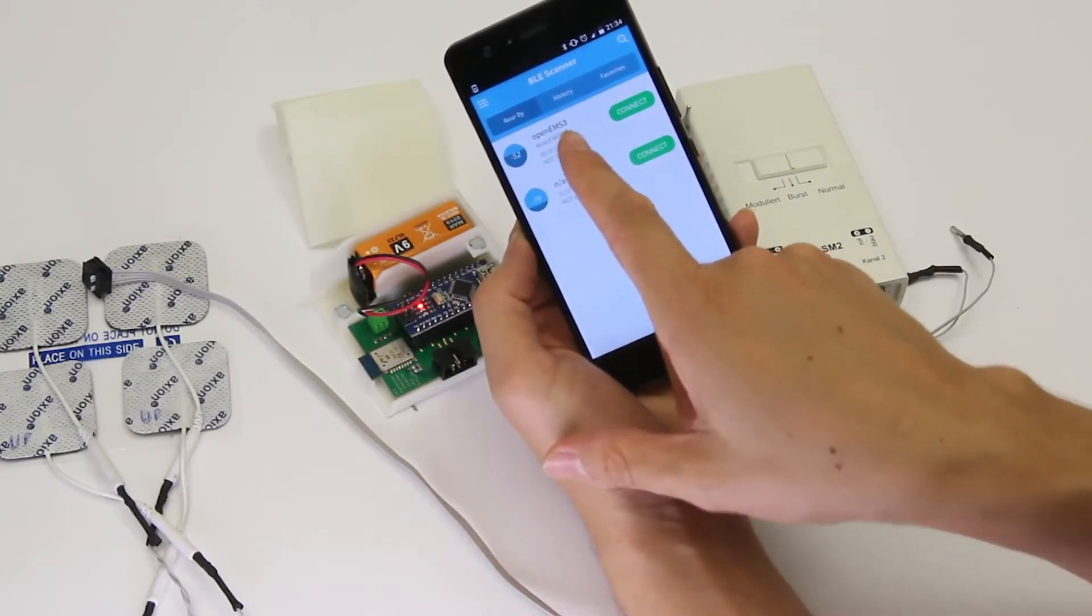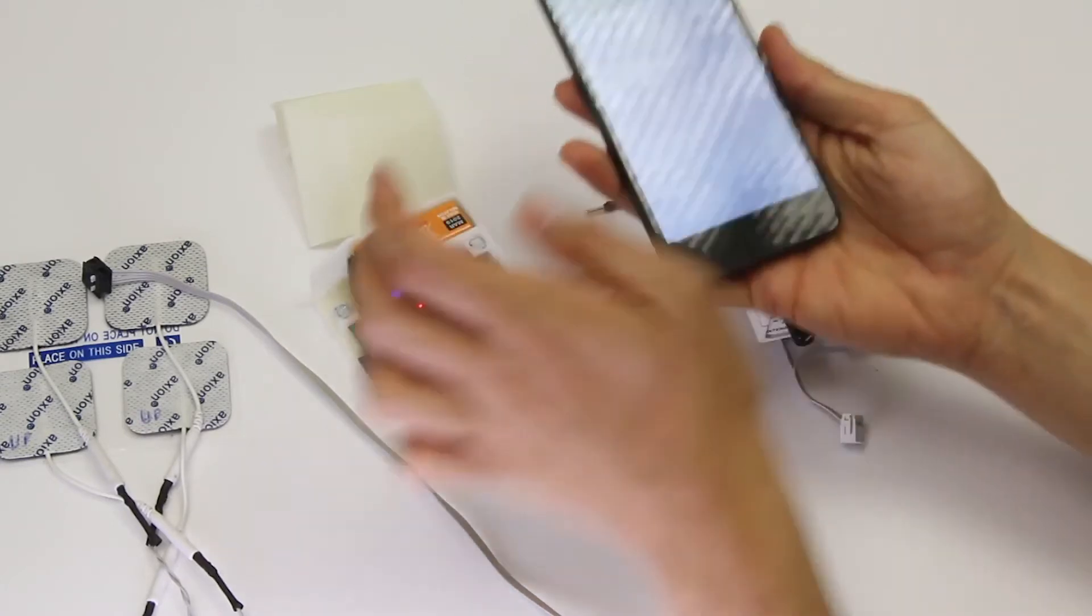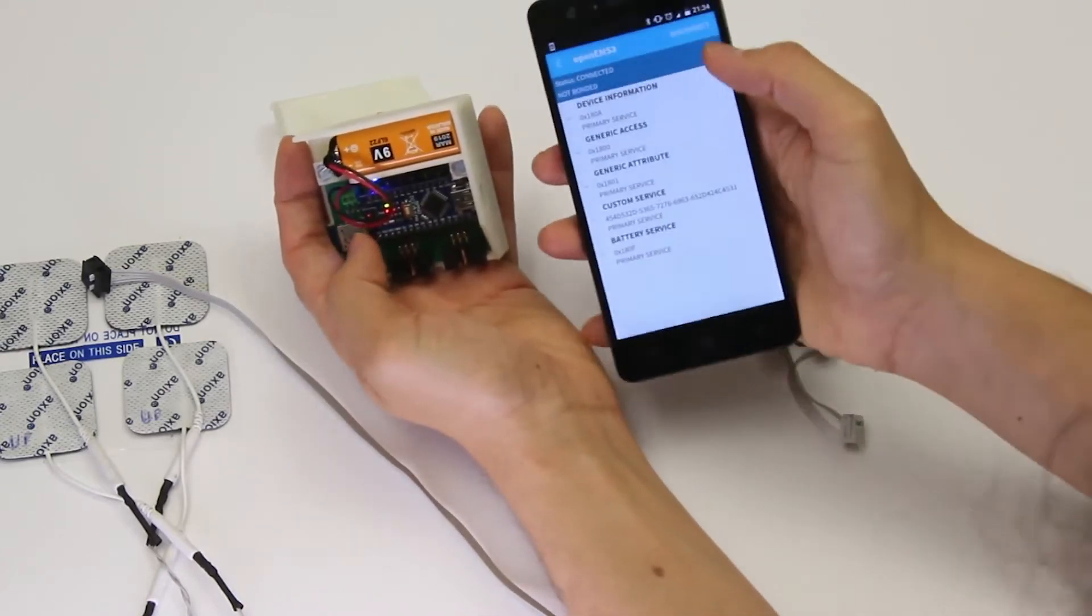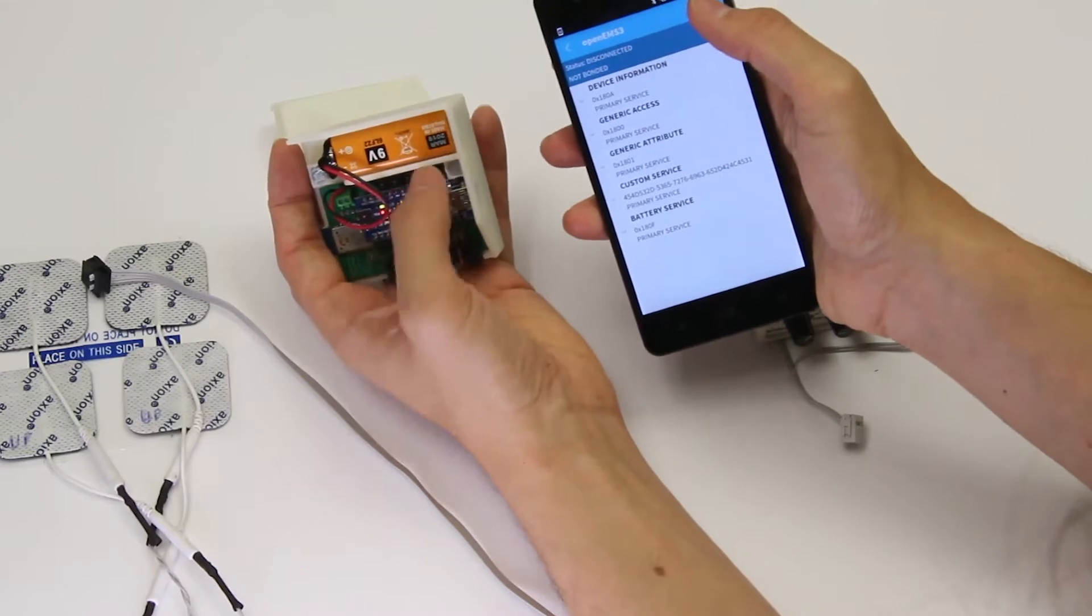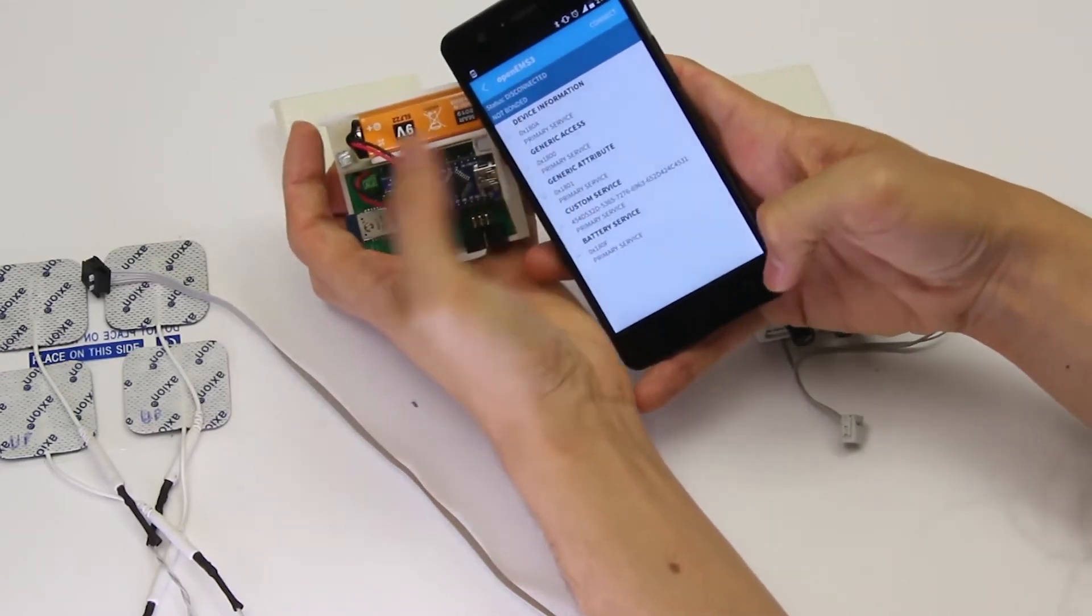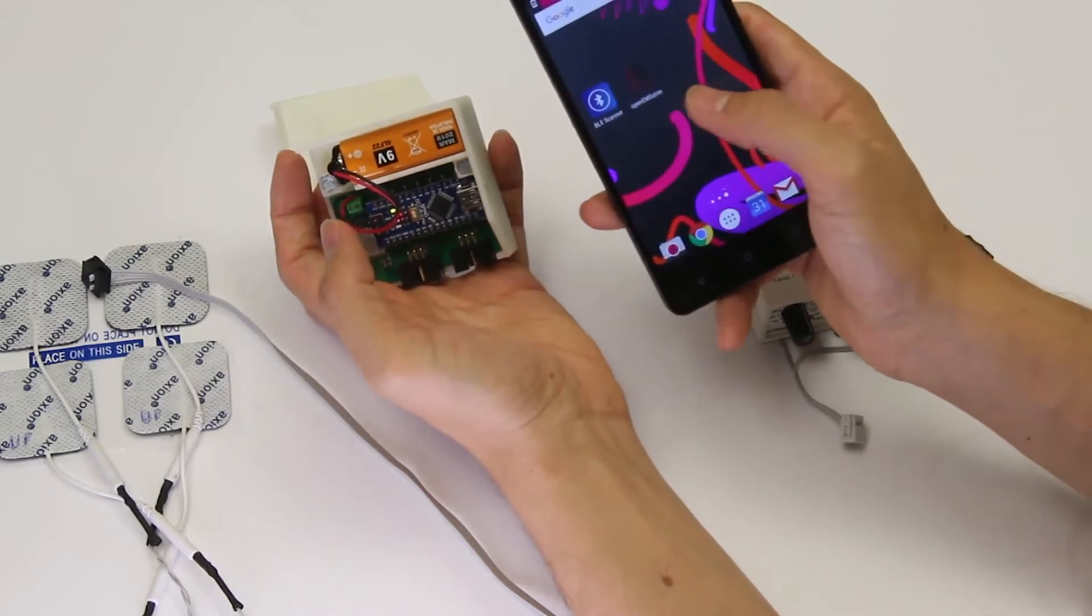You can actually tap and say connect, and look at that - there's a blue LED on the board that just lit up. If I say disconnect, that blue LED goes off. So the connection between the board and our Android device is verified and it works.